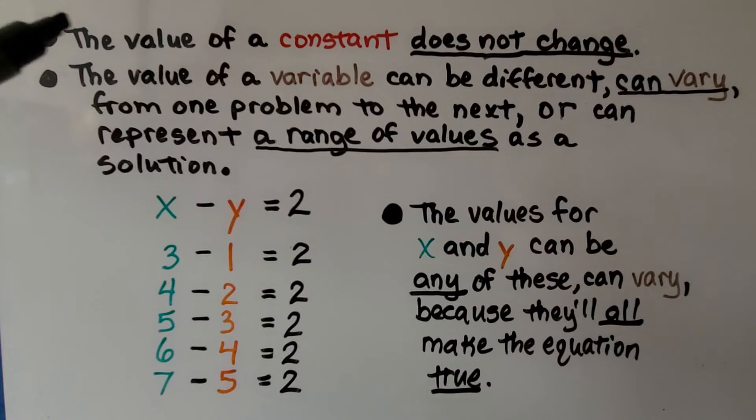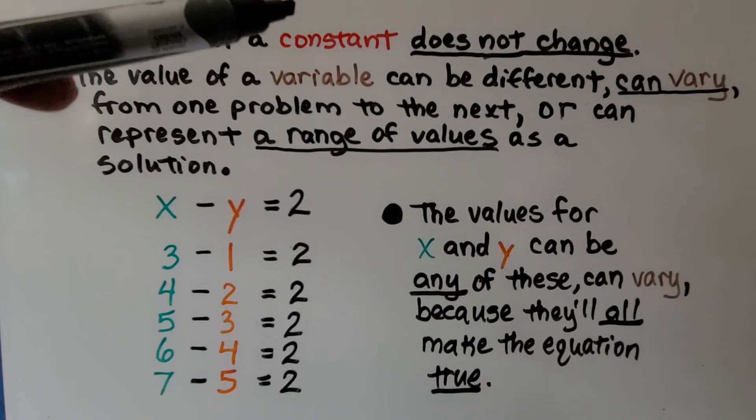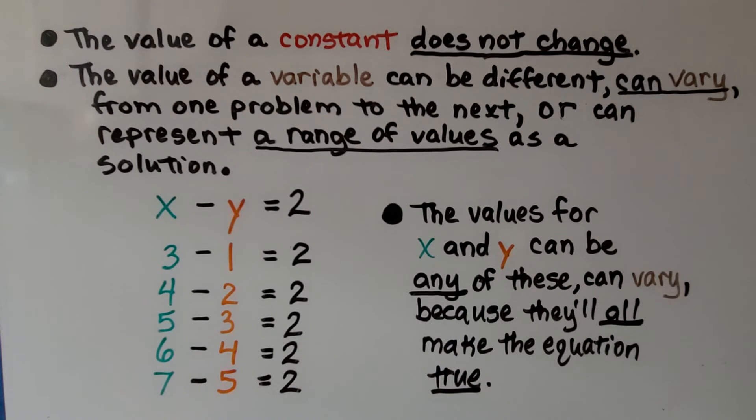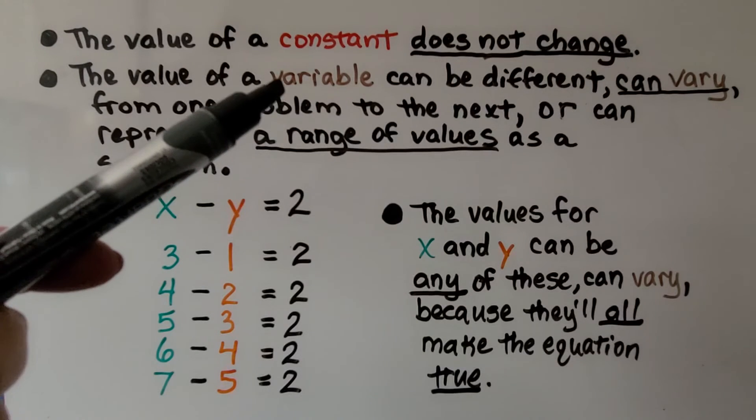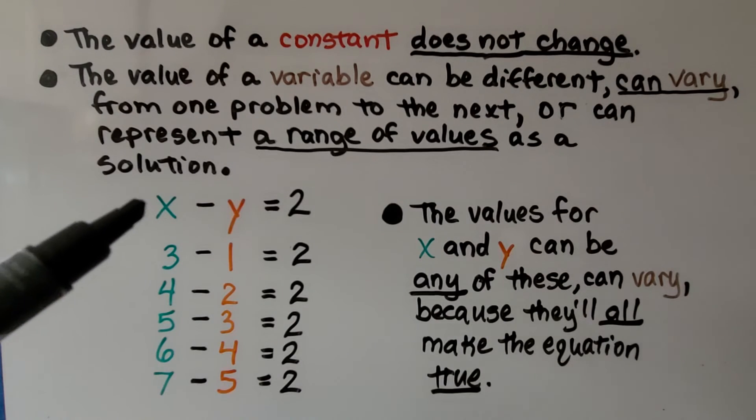So remember, the value of a constant does not change. Its value stays constant. It stays the same. The value of a variable can be different. It can vary. See? Variable. Vary from one problem to the next, or can represent a range of values as a solution.